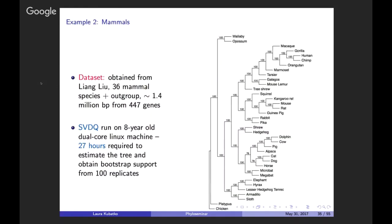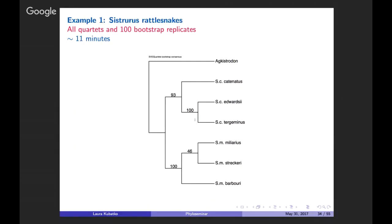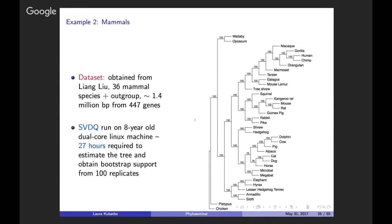As a larger-scale example, we used a mammal dataset with 37 taxa (36 mammal species plus an outgroup), 1.4 million base pairs, and 447 genes. Running SVD quartets on an old dual-core Linux machine took about 27 hours to estimate the tree and obtain 100 bootstrap replicates. That may seem long unless you've tried other coalescent-based methods, which can take days to weeks. This tree was also very similar to more computationally intensive analyses.